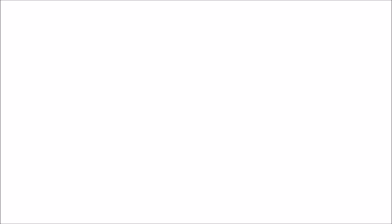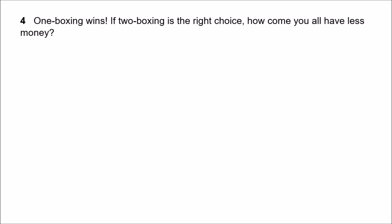A final argument for one-boxing is pretty simple: one-boxing wins. The two-boxers can feel very pleased with themselves for having made the rational decision according to whatever their pet decision theory is, but at the end of the day, they have less money. The one-boxers win. If two-boxing is the rational choice, why are almost all of us richer than almost all of you? I'd say that's a pretty conclusive argument for one-boxing.